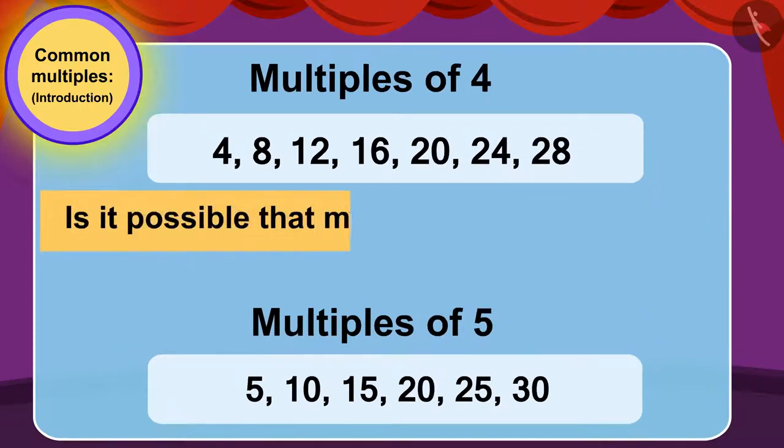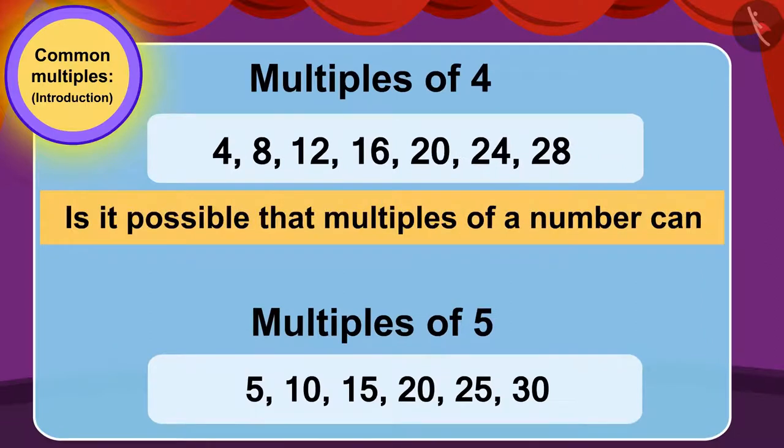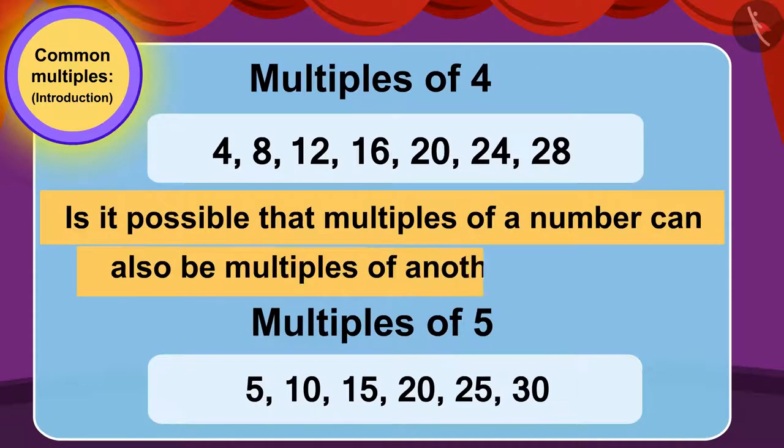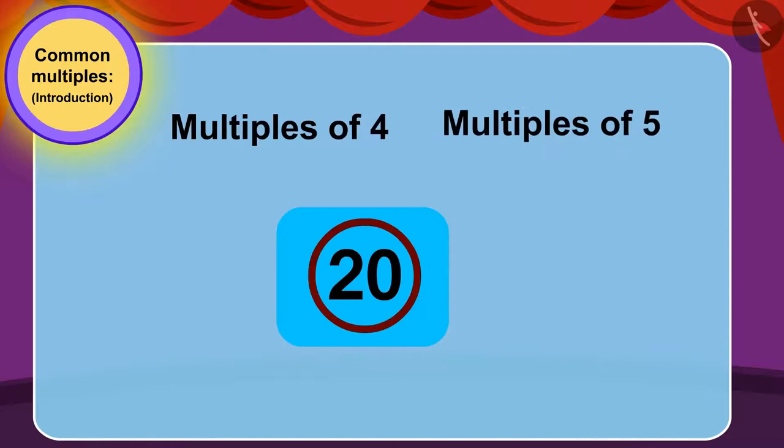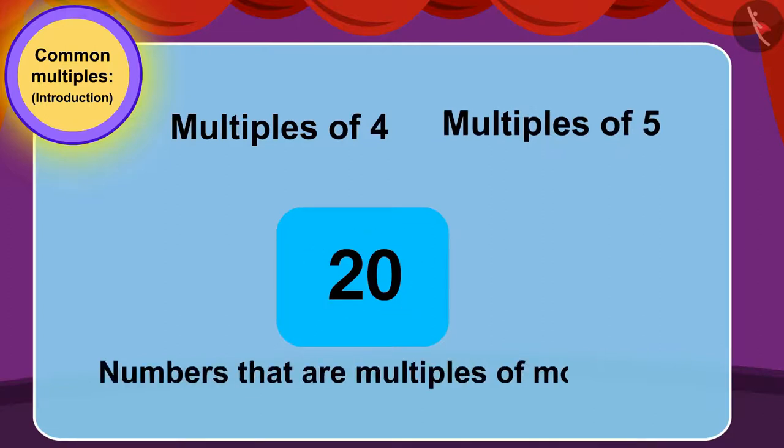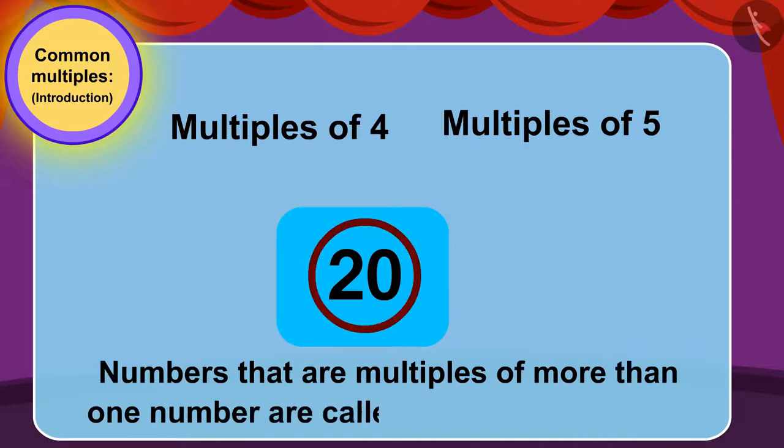Is it possible that multiples of a number can also be multiples of another number? Yes, it is quite possible that a number is a multiple of more than one number. Numbers that are multiples of more than one number are called common multiples.